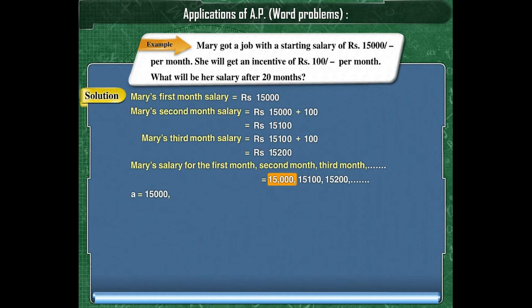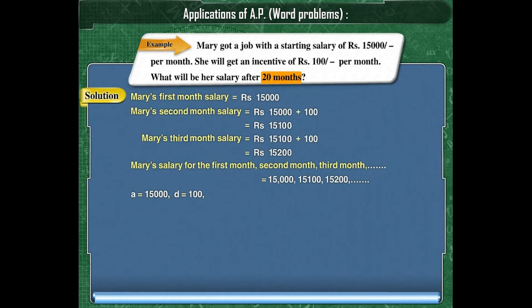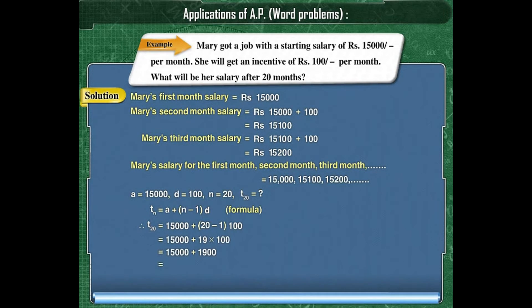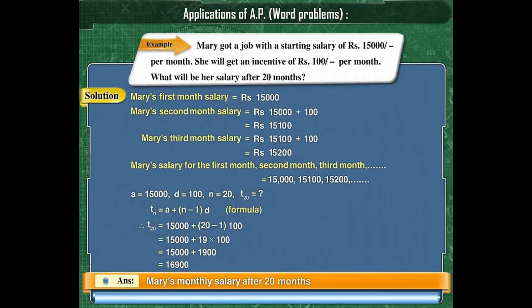We want to find the salary after 20 months, meaning N is 20. We have to find T20. Using the formula TN = A + (N − 1) × D, and substituting the values of A, N, and D, we get T20 = 15,000 + (20 − 1) × 100, which simplifies to T20 = 16,900. Therefore, Mary's monthly salary after 20 months is rupees 16,900.